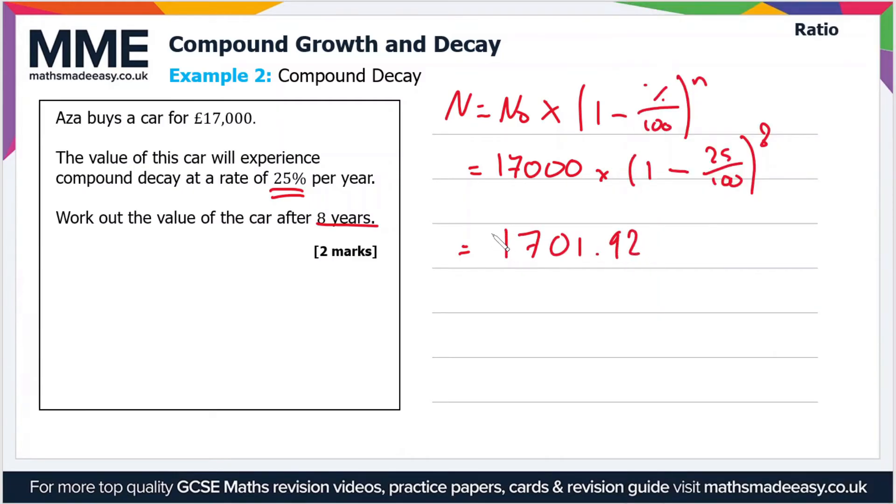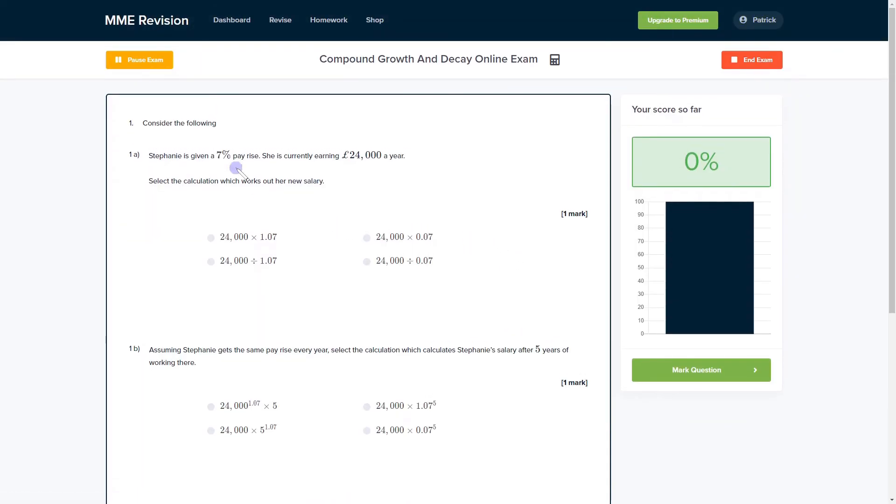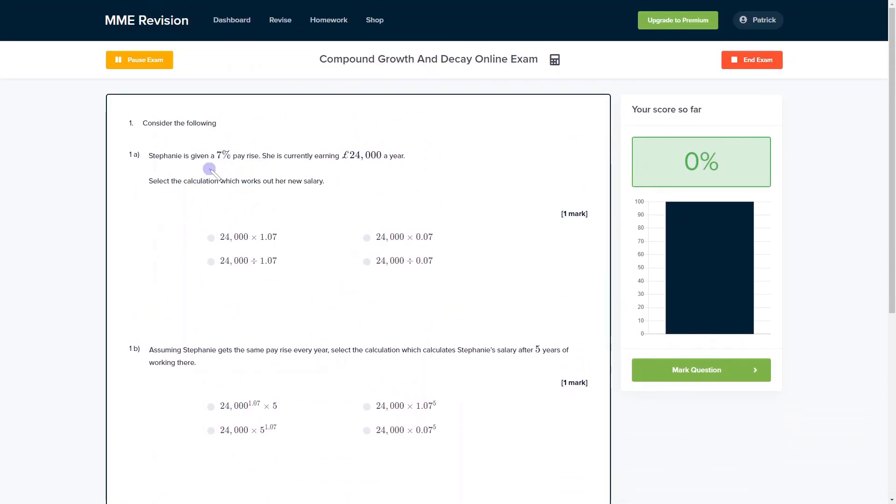Now compound growth and decay is a skill that takes some practice, especially using the formula, so you can do so with our online exam—it's available through our revision platform. And if you take the test, you'll find loads of different questions to practice with, so you get instant feedback on each and every question.